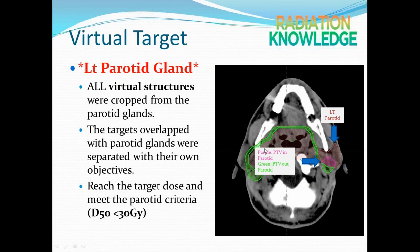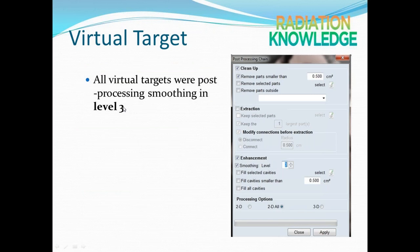Finally, all virtual targets were post-processed with smoothing at level 3. This is quite important, as it reduces conflict between virtual targets or targets that are very non-uniform. Try to use this smoothing feature when you do your optimization.